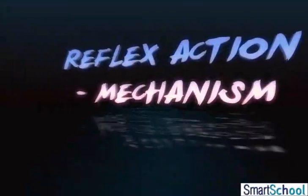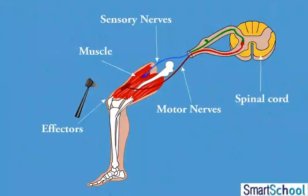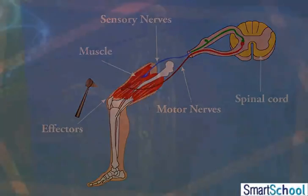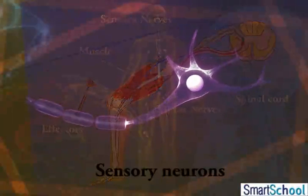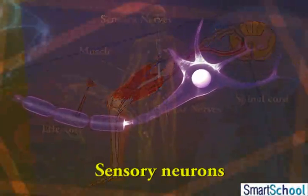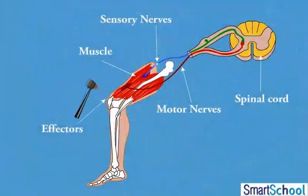In reflex action, the fine tips, i.e., dendrites of receptors, i.e., sensory neurons, quickly relay a message in the form of an electric impulse via sensory nerves to the spinal cord.